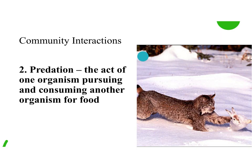Our second type of interaction is predation. Think predator and prey. Predation is the act of one organism pursuing and consuming another organism for food. Here you can see — I think this is a bobcat — it's chasing after the bunny.